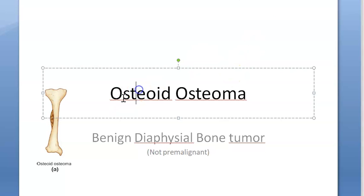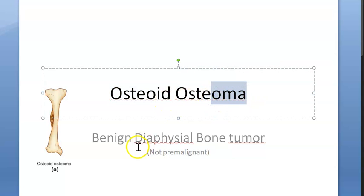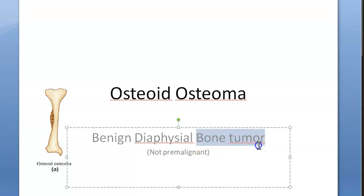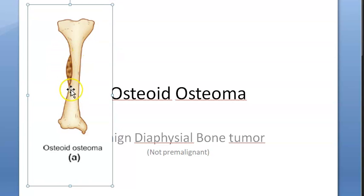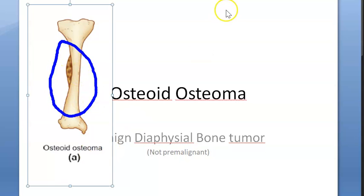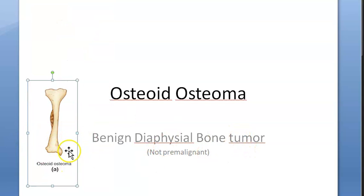In this video let us look at osteoid osteoma. The name 'osteoid' indicates new bone formation, so it is a bone-forming type of tumor. 'Oma' indicates it is benign. It is a benign bone tumor that affects the diaphysis of the bone. It is a diaphyseal tumor and importantly it is not pre-malignant — it has a good prognosis.